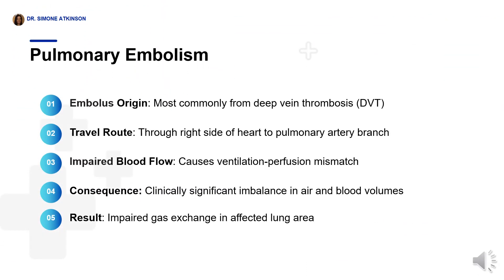An embolus, which typically originates from deep vein thrombosis or DVT, travels through the right side of the heart and lodges within a branch of the pulmonary artery. This lodging abruptly stops the flow of blood, leading to a condition where ventilation and blood circulation become imbalanced — termed ventilation-perfusion mismatch. In simple terms, this involves a notable difference between the volume of air and the volume of blood circulating in the affected lung region, leading to compromised gas exchange.